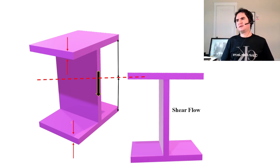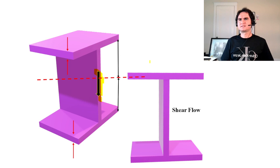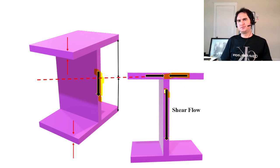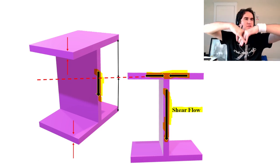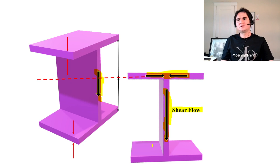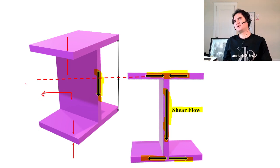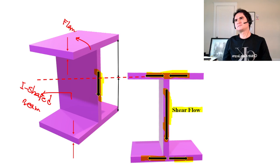Consider an I-shaped section handling a vertical shear. The shear flow on the structure due to vertical shear comes together at the top flange, dives down through the web, and then diverges again to the bottom flange. So in an I-shaped beam, these are the flanges — top flange and bottom flange — and this is the web.